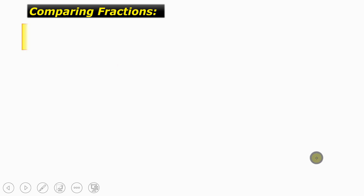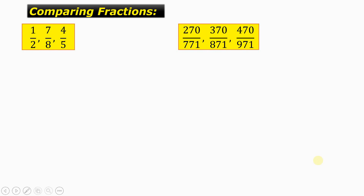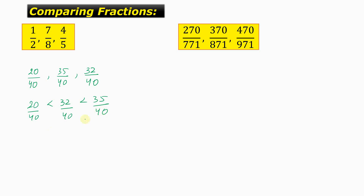Let's check out the concept of comparing fractions. We have two questions: compare 1/2, 7/8, and 4/5 in increasing order; and compare 270/771, 370/871, and 470/971 in increasing order. For the first question, we make the denominator constant at 40. So 1/2 becomes 20/40, 7/8 becomes 35/40, and 4/5 becomes 32/40. Now 20 is less than 32 is less than 35. So 20/40 is less than 32/40 is less than 35/40 — that is, 1/2 is less than 4/5 is less than 7/8.